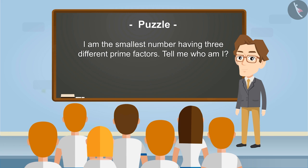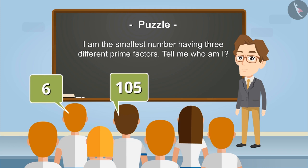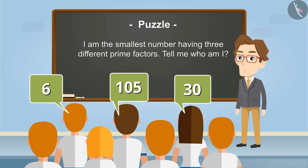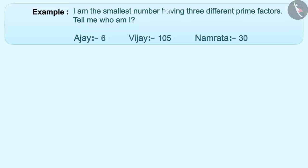Ajust's reply is 6, someone else's reply is 105, and Namrata's reply is 30. In your opinion, who gave the correct answer? Let's read the puzzle once again: 'I am the smallest number having three different prime factors. Tell me who am I?'